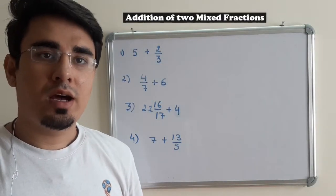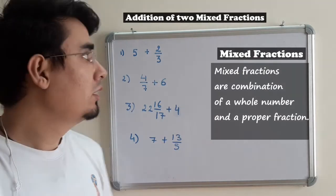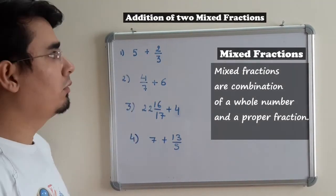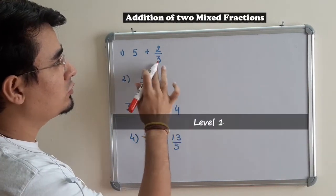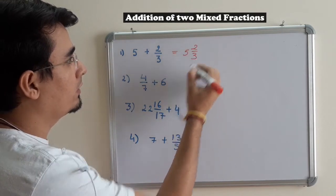As we know, mixed fractions are the combination of a whole and a proper fraction. In this case, this is a whole number and this is a proper fraction. If I add these two, I will get a mixed fraction: 5 2/3. That easy.